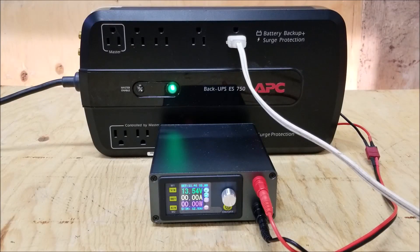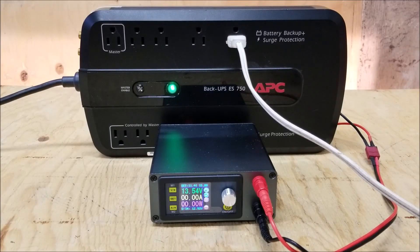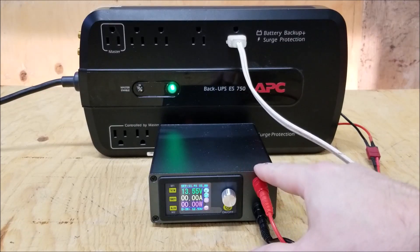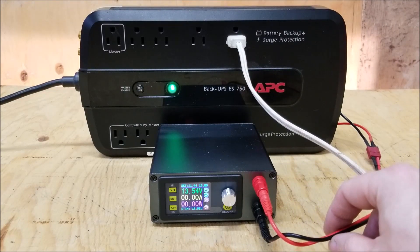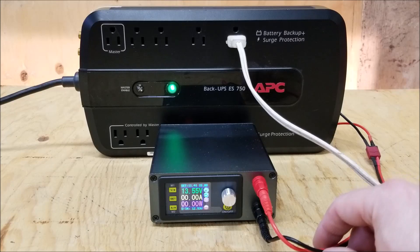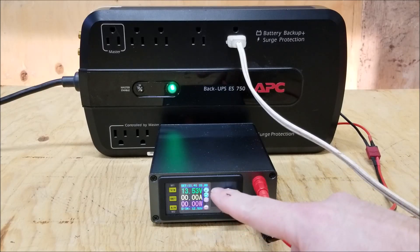Okay, so this UPS is plugged in and turned on. This DC to DC converter is actually connected to the battery, just using it to be able to see the voltage of the battery.